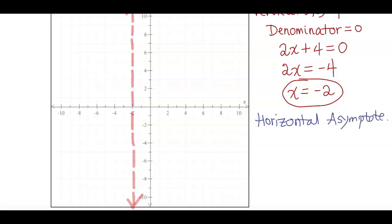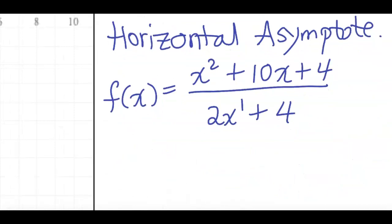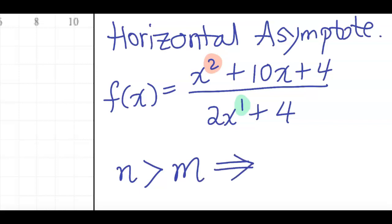Now let's find the horizontal asymptote. To do that, we look at the degree of the numerator and the degree of the denominator. The degree of the numerator is 2 and the degree of the denominator is 1. When the degree of the numerator n is greater than the degree of the denominator m, this function has no horizontal asymptote.